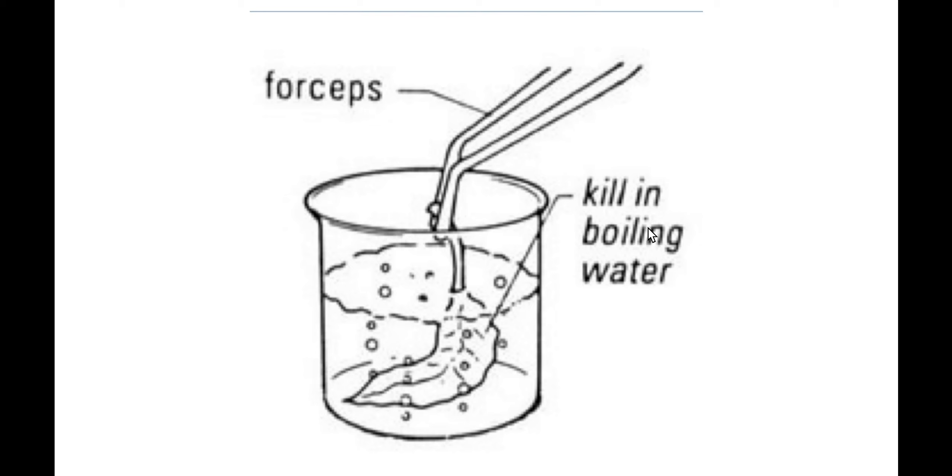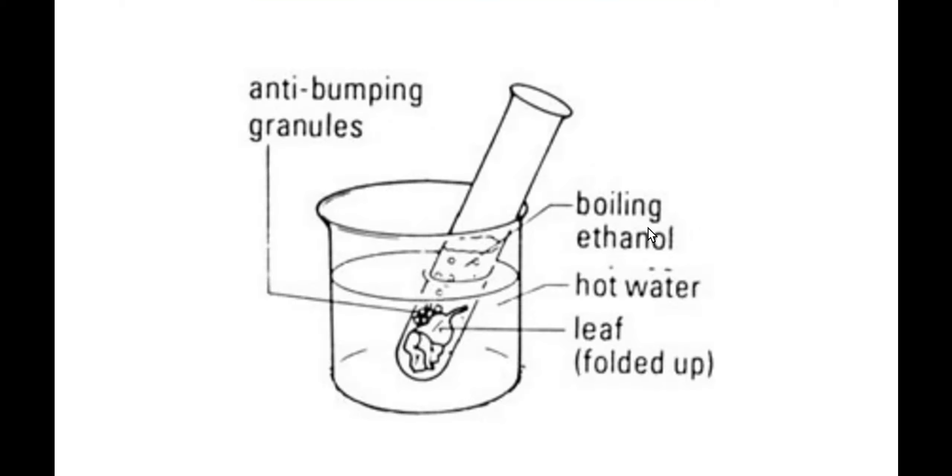What we're then going to do is boil that leaf in water on a hot plate, and what that will do is help break down the cell wall and allow us to test for the presence of starch using iodine solution. When we heat the leaf it'll go really soft and smooshy, and then we will put it into a test tube containing some ethanol or methylated spirits.